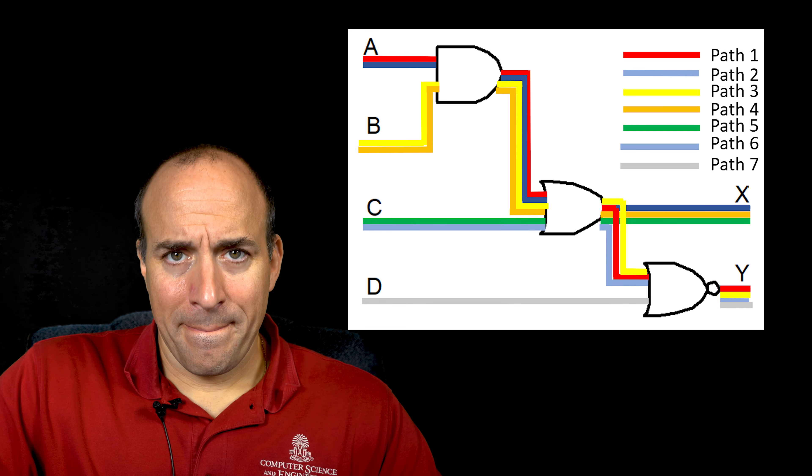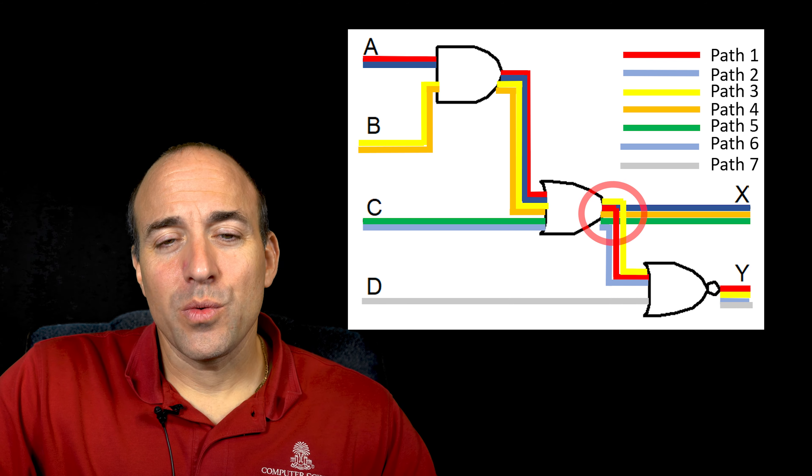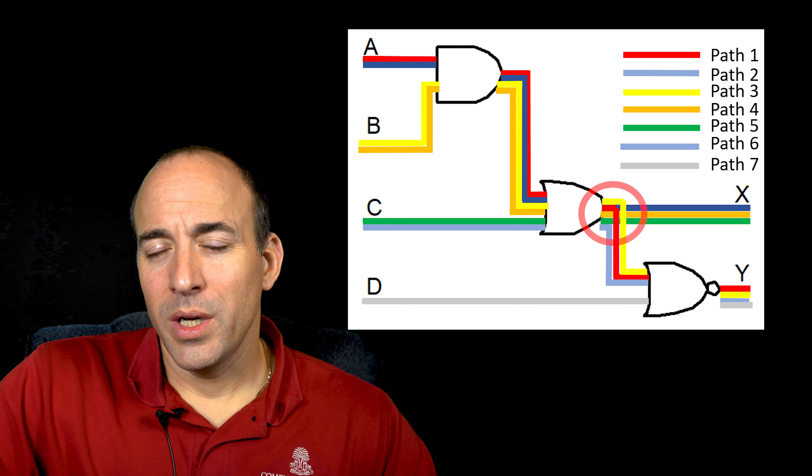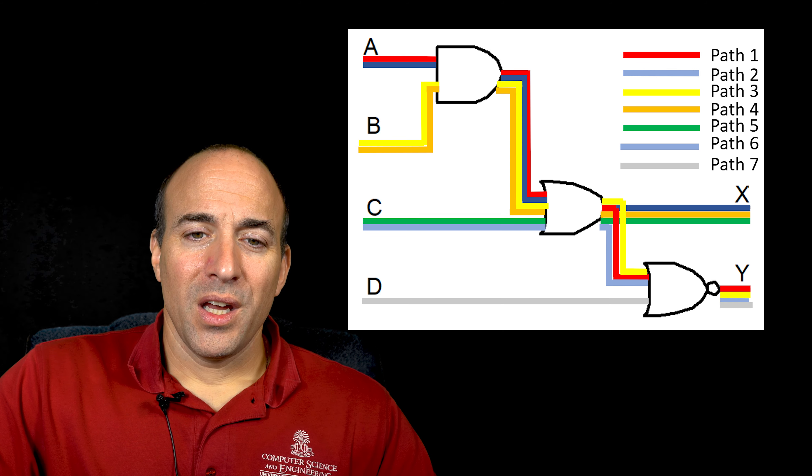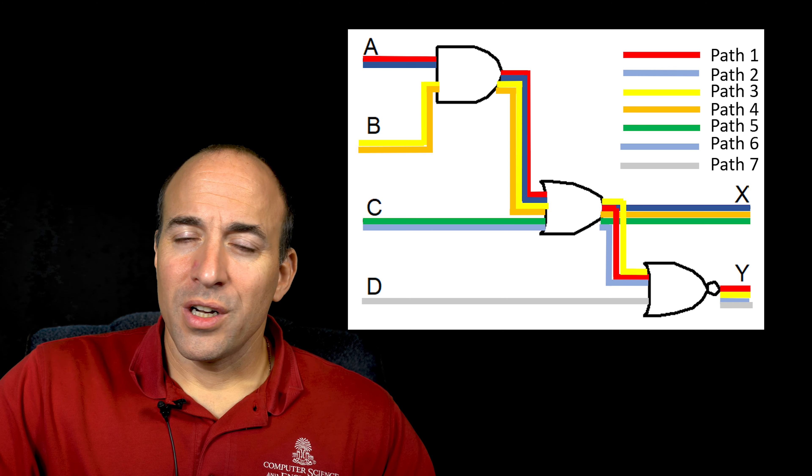A combinational circuit comprised of multiple gates will have multiple paths through which the inputs flow to the outputs. A fan-out is when a gate's output is connected to the inputs of more than one other gate. So there are two raised to the nth power paths per input, where N is the number of gate fan-outs along the input path. In this case, we have one fan-out affecting inputs A, B, and C, meaning the total number of paths is 2 to the 1st plus 2 to the 1st plus 2 to the 1st plus 2 to the 0th power because input D does not fan-out.